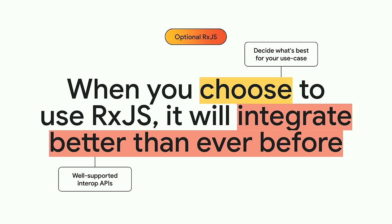Partial Hydration can help web applications reduce their initial bundle sizes, reducing total blocking time and improving core web vitals. We've been actively prototyping partial hydration in Angular, and we're very excited about it. Once we released deferrable views, we knew we had the perfect building block to power Angular's partial hydration. With partial hydration, deferrable views will behave slightly differently — rather than rendering your placeholder on the server, we'll actually render your deferrable view's main template instead, so your deferred content actually is your placeholder. Triggers will then act to fetch dependencies and hydrate rather than just rendering it.